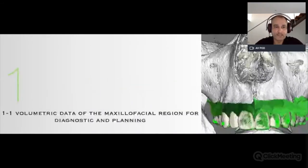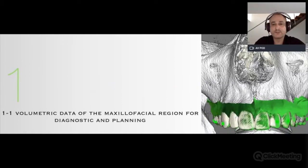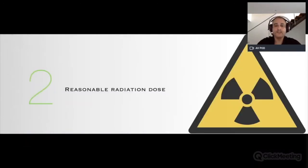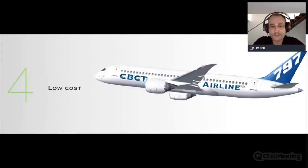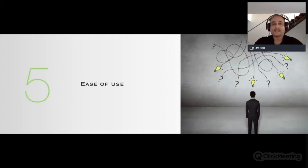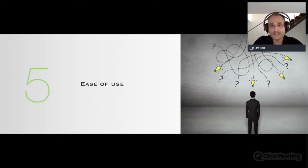Why do we use the CBCT? It gives us one-to-one volumetric data of our area of interest — the maxillofacial region — for both diagnosis and treatment planning. It provides very reasonable radiation exposure compared to other techniques. The compact size of modern machines allows easy integration into clinical environments. The low cost is also very important, and the cost is getting lower as the technology improves. Modern CBCT machines are very easy to use and integrate into practice.